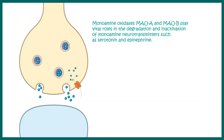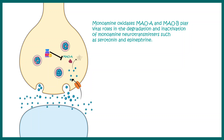Whenever neurotransmitters are reuptaken by the presynaptic terminal, enzymes such as monoamine oxidase A can break them down, reducing the concentration of serotonin in the synaptic cleft. In the case of depression, several medications are used as monoamine oxidase inhibitors, which prevent the degradation of serotonin. This means serotonin remains present in the synaptic cleft for a longer duration, making MAO inhibitors important in treating depression.